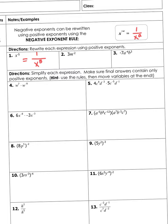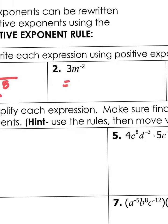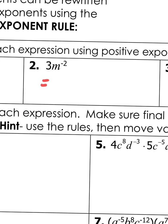For number 2, it says 3m to the negative second power. The 3 is positive — that's the coefficient we've been talking about. That's not going to flip to the denominator. The only thing that flips is the exponent with the variable it's attached to. So this m to the negative second will flip to the bottom and become 3 over m squared.